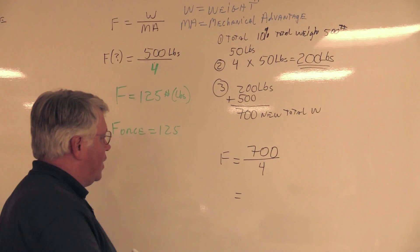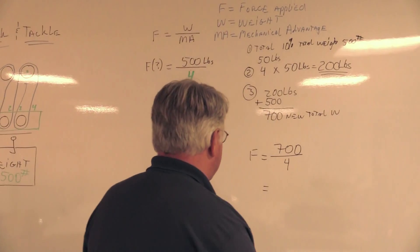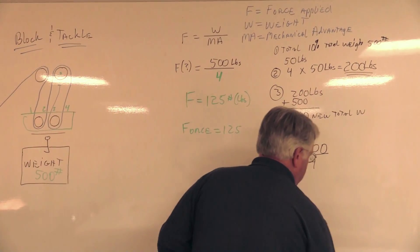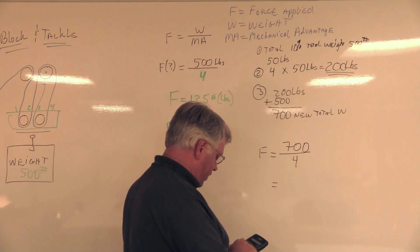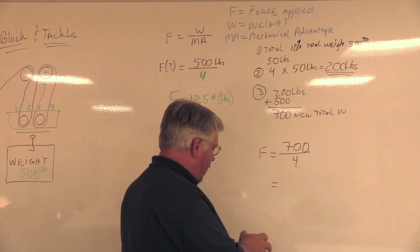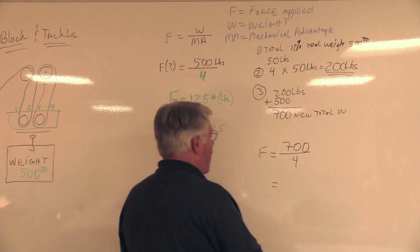So now I'm going to take and finish out my formula by taking my 700 pounds, all right? So I get out my trusty TI-30XA, and I'm going to take 700, and I'm going to divide it by four. And now I have 175 pounds.